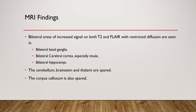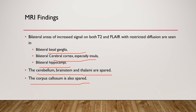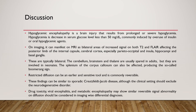To summarize the MRI findings: there are bilateral areas of increased signal on both T2 and FLAIR images which show restricted diffusion in bilateral basal ganglia, bilateral cerebral cortex especially insula, as well as bilateral hippocampi. The cerebellum, brainstem, and thalami are spared. The corpus callosum is also spared. The final diagnosis is hypoglycemic encephalopathy.